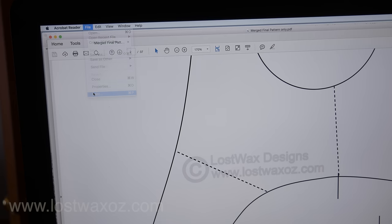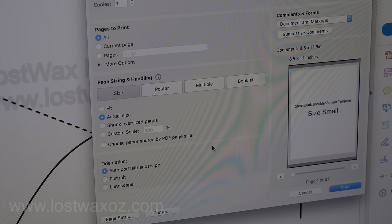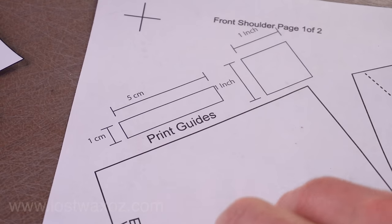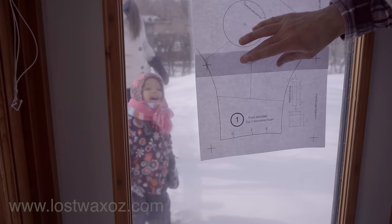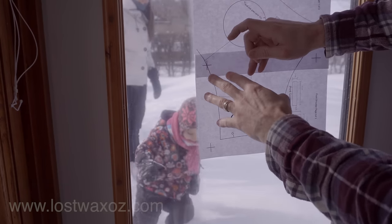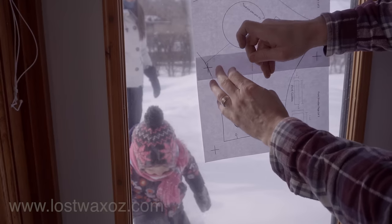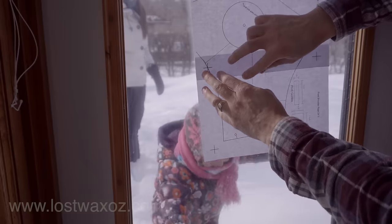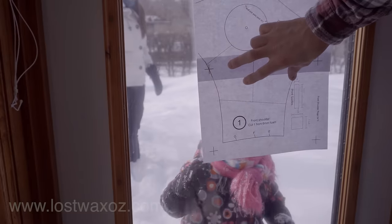Start by printing out the pattern making sure the scale is set to actual size. You can verify that everything is perfect by measuring the print guides. Some of the pattern pieces are larger than a normal sheet of paper so you're going to have to tape them together. I like to use my window because it makes it easy to see through the paper and see the alignment markings. I also get to see the great outdoors.